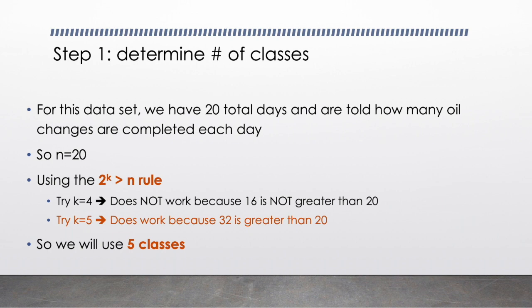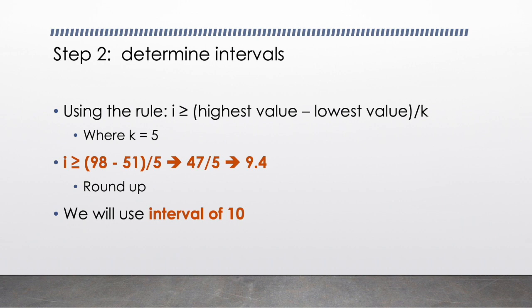Let's move on to step 2. We're going to determine the intervals. There's a rule we're going to use where I, being the value of the intervals, is greater than or equal to: we're going to take the highest value in our data set and subtract our lowest value and then divide by k, where k equals 5, our number of classes found in step 1.